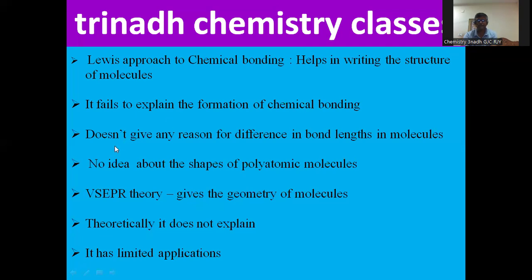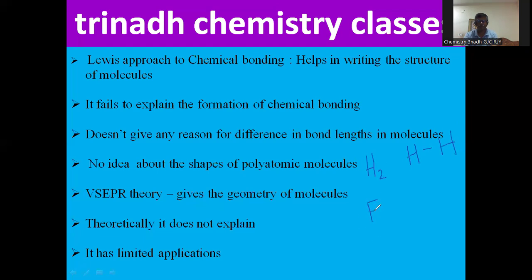It does not give any reason for the difference in bond lengths in molecules. For example, if you take the H2 molecule, there is an H-H sigma bond. Similarly, if you take F2 molecules, there is an F-F sigma bond. So why is there a difference in bond lengths? This failed to be explained by the Lewis approach.